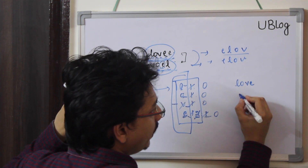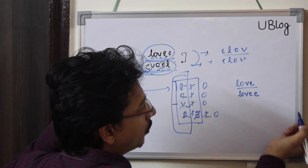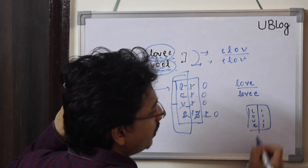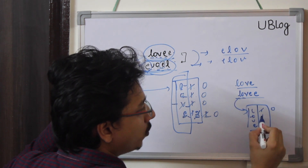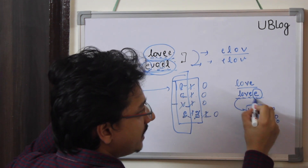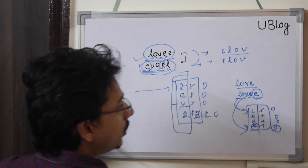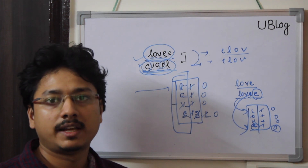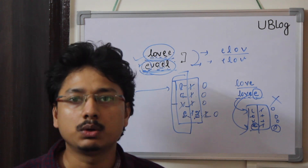Let's try another example: first string is 'LOVE', second is 'LOVEE'. I build the hash map: L → 1, O → 1, V → 1, E → 1. I iterate the second string: L → 0, O → 0, V → 0, E → 0. Then I hit the extra E — its value is already 0, meaning no more E's were in the first string. So I return false: they are not permutations of each other.